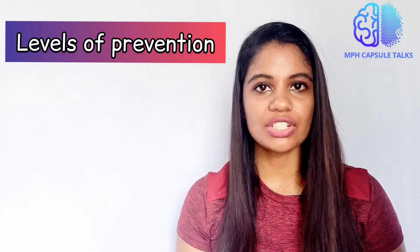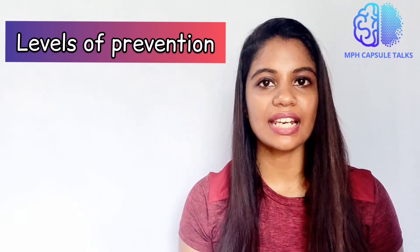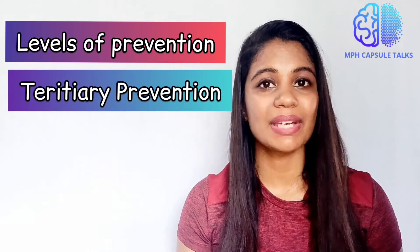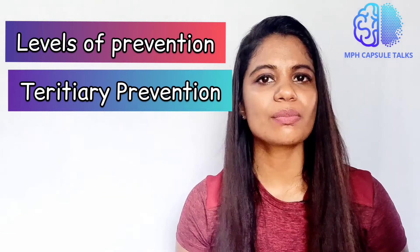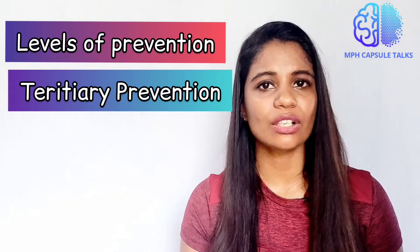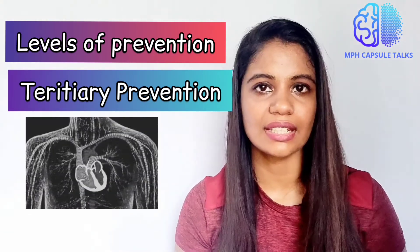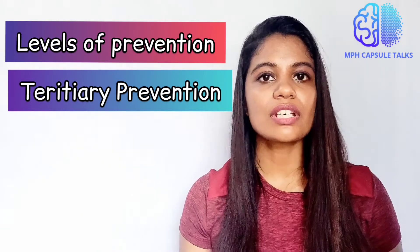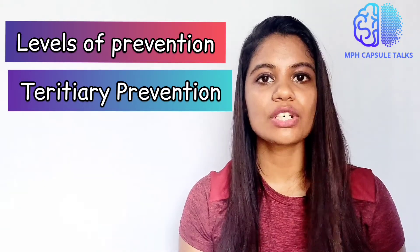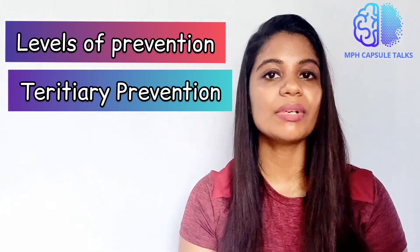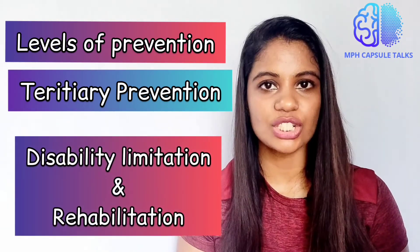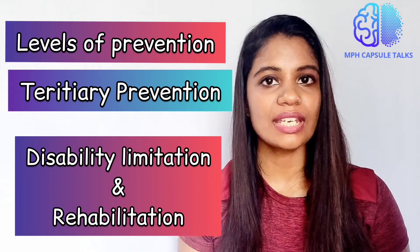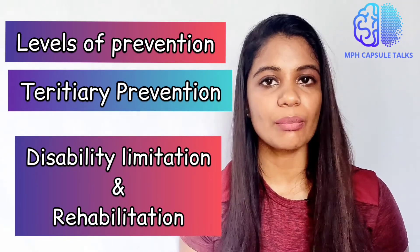The final level of prevention is tertiary. John unfortunately forgot to take his medications regularly and remained an alcoholic and fast food addict, and he got a heart attack. All the doctors could do for John was disability limitation and rehabilitation, which include medications, exercise training, and emotional support.